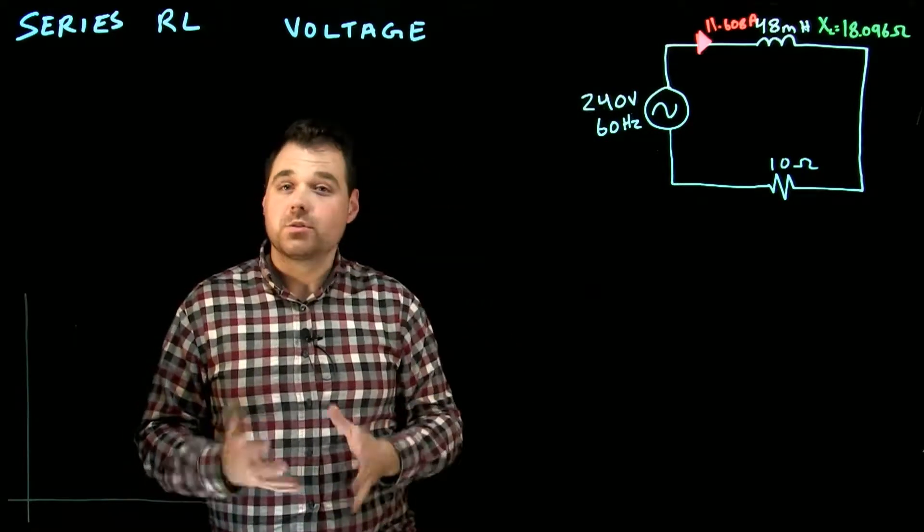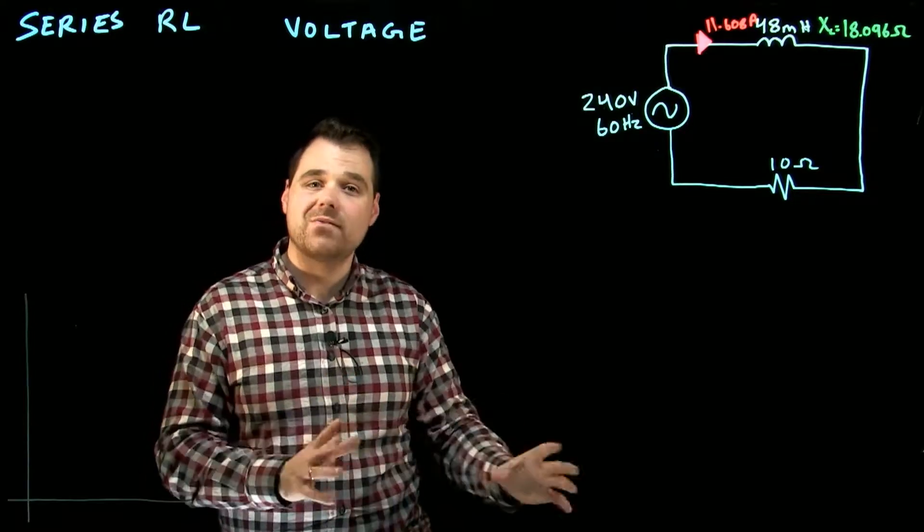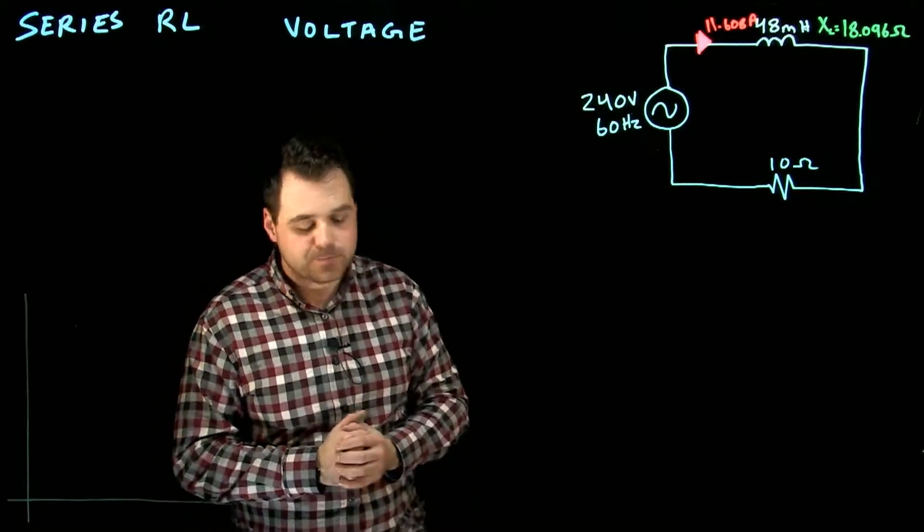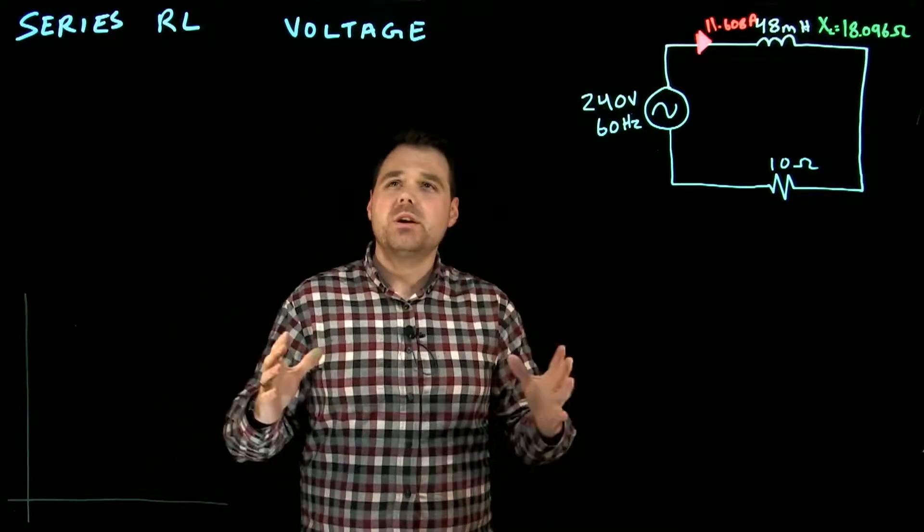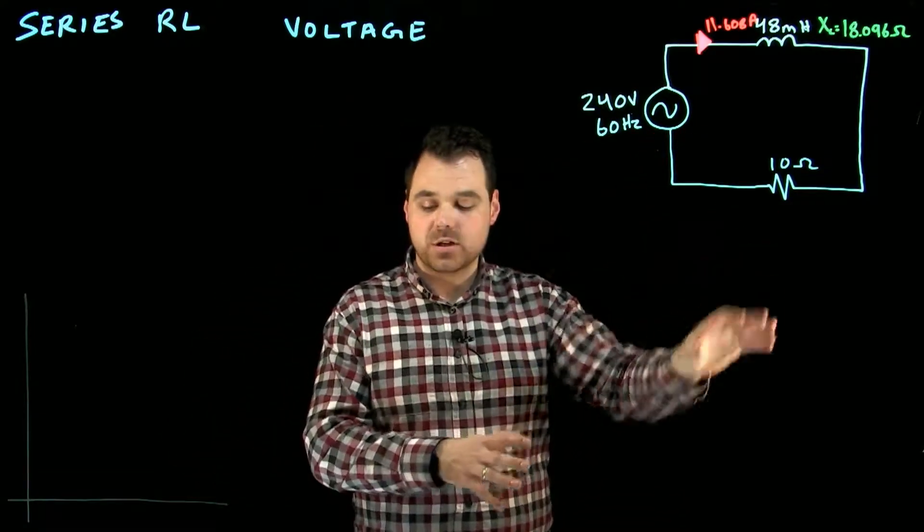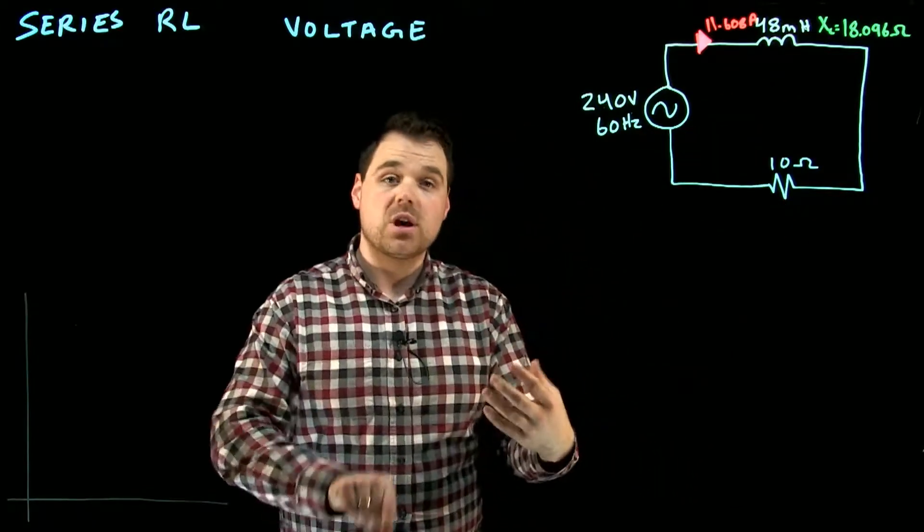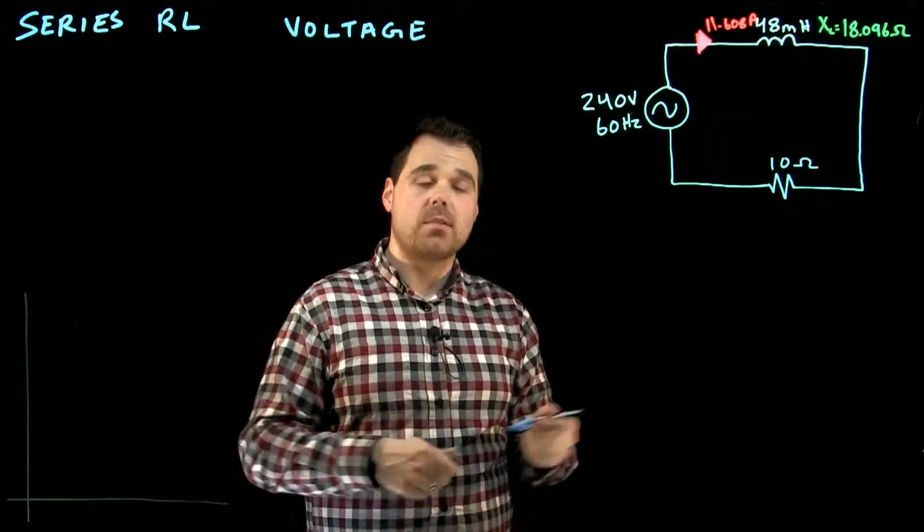Before you watch this video, just make sure you know how to do an HV chart and add phasors together because we are going to be doing that. What we're going to get to in this video is talking about the voltage relationships with the current in this particular circuit, and then we're actually going to add up the voltage drops to check against our source voltage to make sure we're correct.